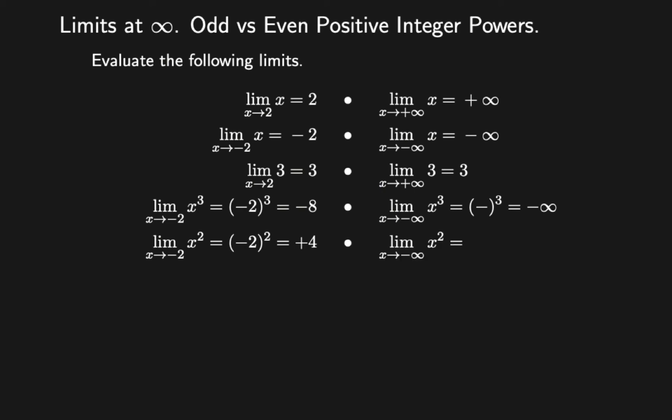Find the limit of x squared as x approaches minus infinity. If you substitute x with a negative number, you will get a positive number because you have an even positive integer power. Remember: for odd positive integer power, substituting x with a negative number gives a negative number; for even positive integer power, substituting a negative number gives a positive number. For x approaching a positive number, the answer will always be positive.